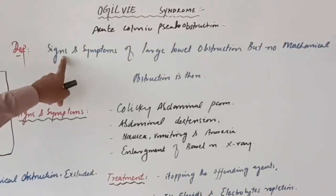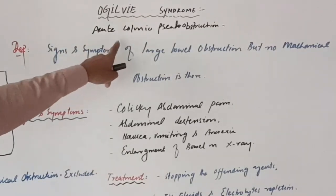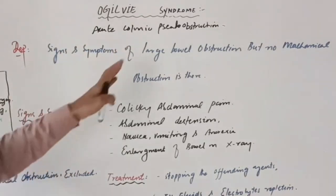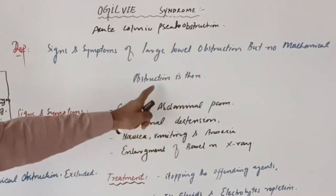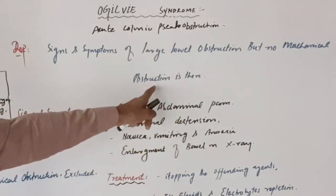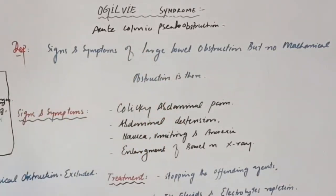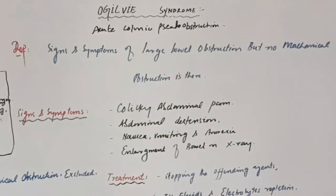Ogilvie syndrome is defined as the signs and symptoms and radiologic findings of large bowel obstruction, but there is no actual mechanical obstruction. So in this condition there are signs and symptoms of obstruction but no mechanical cause.